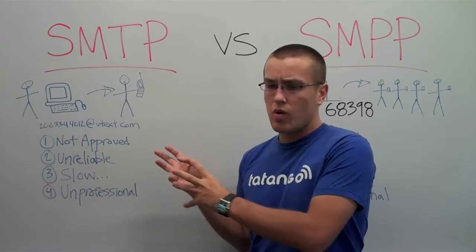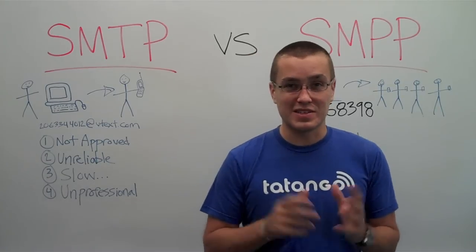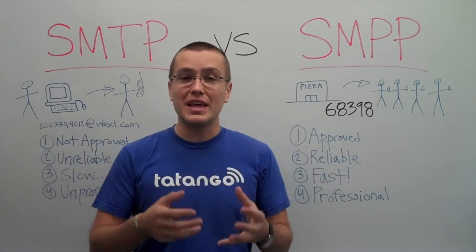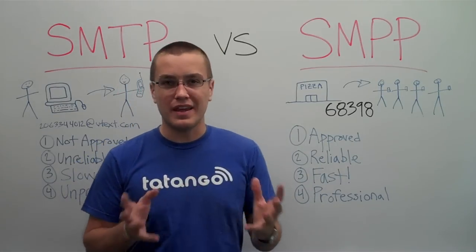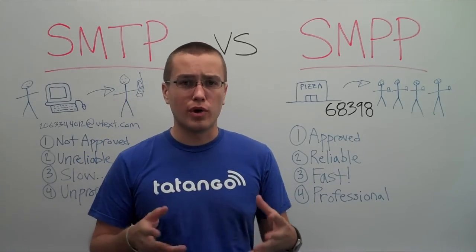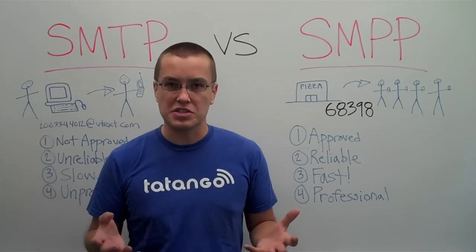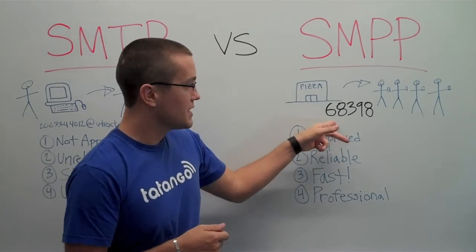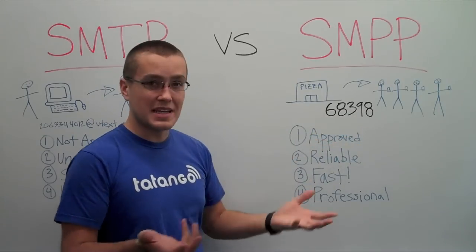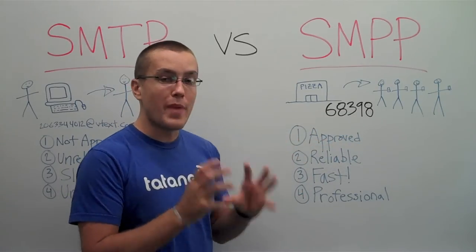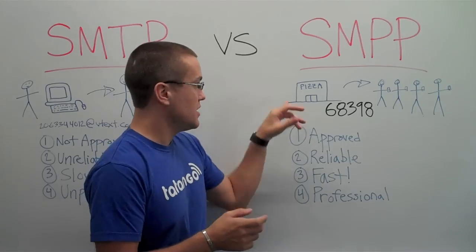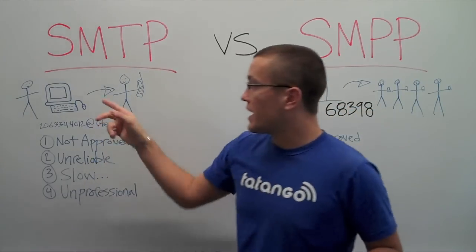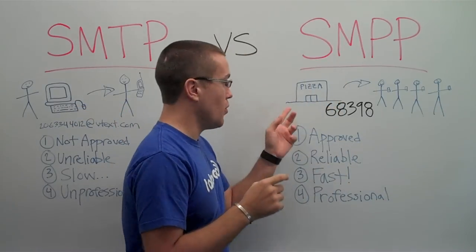So if you can't use SMTP, what do you use? It's pretty easy because there's only one other choice: SMPP messaging. In the industry and in the real world, most people just call it short code messaging, which means it comes from a five to six digit phone number — like 68398, which is Tatango's short code. This one was meant for marketing purposes — a business sending out a message in mass to a lot of people. SMTP is one-to-one; SMPP is one-to-many.